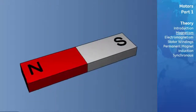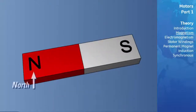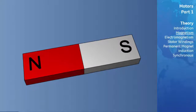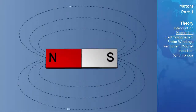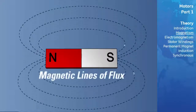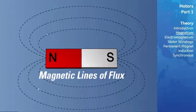Magnets have two poles. One is called the north, while the other is called the south pole. In this picture, we can see dotted lines that run from one pole to the other. These lines represent the magnet's force, called magnetic lines of flux. These lines of flux are closed loops that, by convention, run from the north pole to the south pole, returning to the north pole through the magnet.